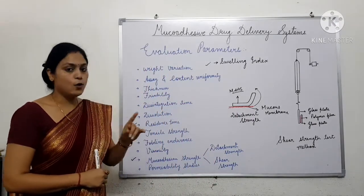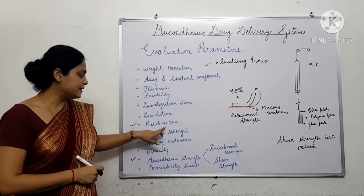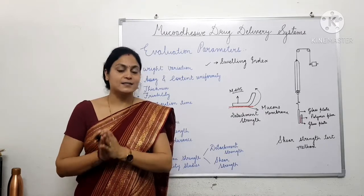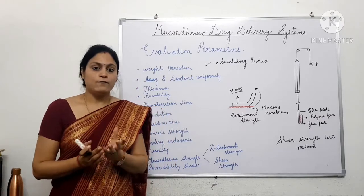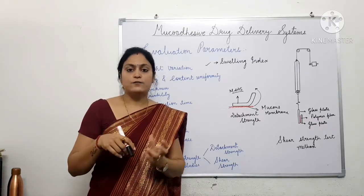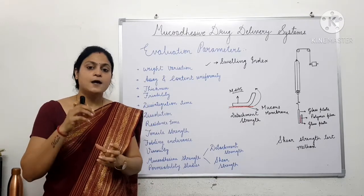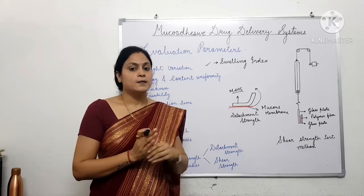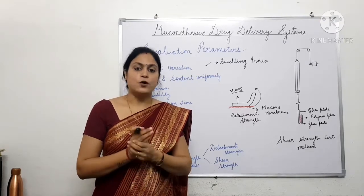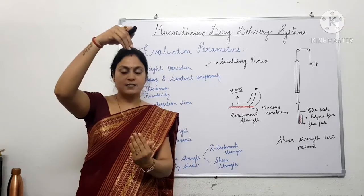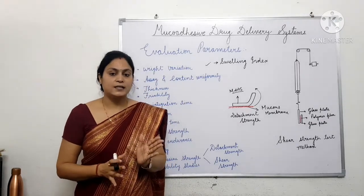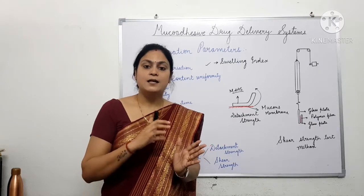One more apparatus for determination of residence time — students, we have seen the USP disintegration apparatus. This apparatus is modified for determination of residence time. In the disintegration apparatus, a beaker is there in which about 800 ml of medium, maybe phosphate buffer 6.8, is filled. In that beaker, one glass clasp is hanged with a thread, on which a mucous membrane is coated, and the muco-adhesive drug delivery system is adhered onto it.